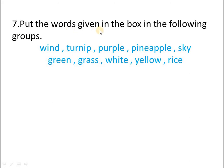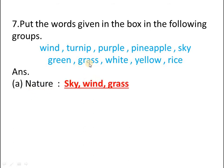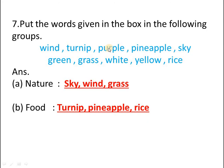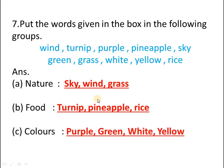Number seven: put the words given in the box into the following groups. The words are: wind, turnip, purple, pineapple, sky, green, grass, white, yellow, rice. We have to put all these words in the proper column. The first column is nature — sky, wind, grass are all natural things. Then food items — turnip, pineapple, and rice. Now colors — purple, green, white, yellow. They are all colors.